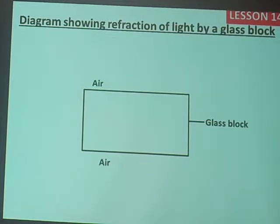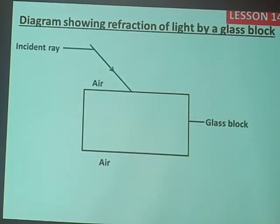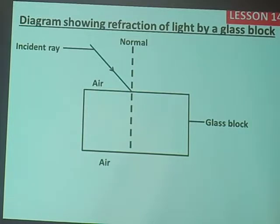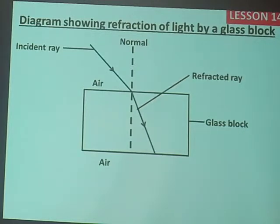When the incident ray strikes the glass block, it is coming from the less dense medium, which is air, and it finds the glass block which is more dense. What will happen to it? It will be refracted towards the normal — it is going to bend towards the normal.